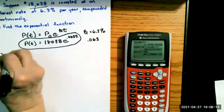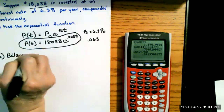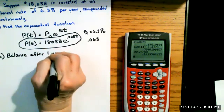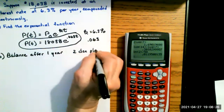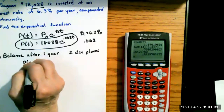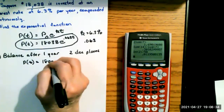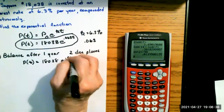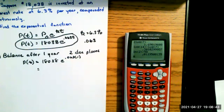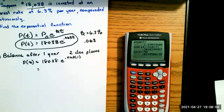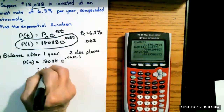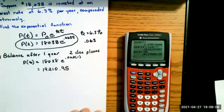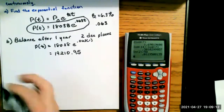Part B asks for the balance after one year to two decimal places. Plugging in t equals 1: P(1) equals 18,038 · e to the 0.063 times 1. Put that in the calculator and you get $19,210.95.